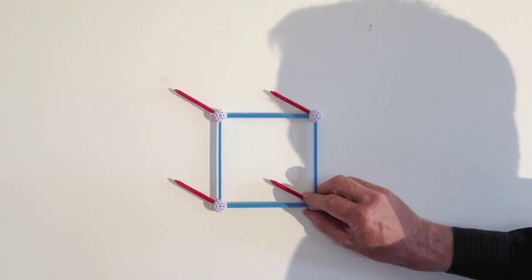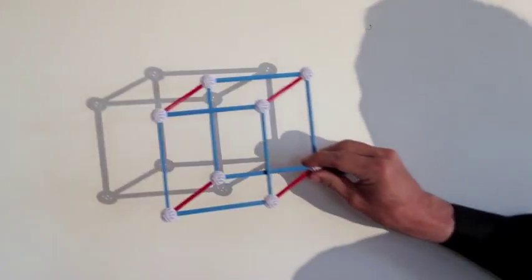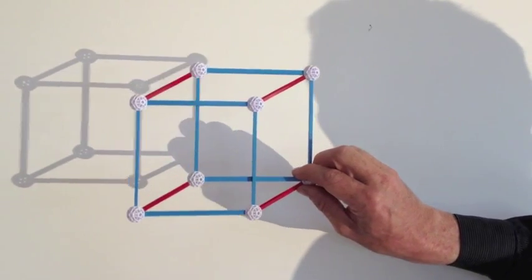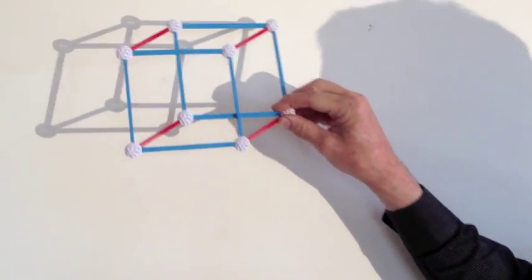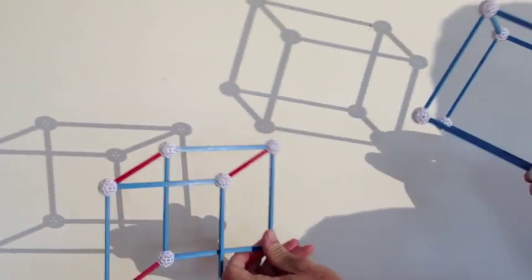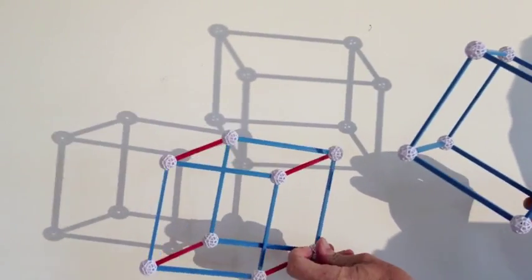And if we connect the speed lines, we end up with this lovely shadow. It's not a cube, but it's a two-dimensional shadow of a cube. And we can see that, right?